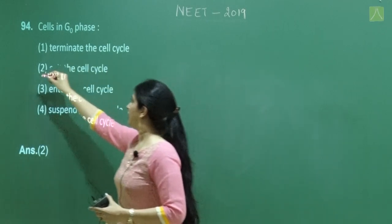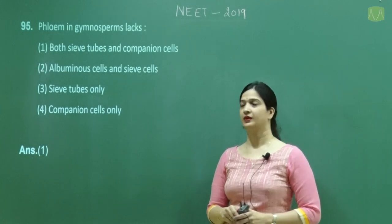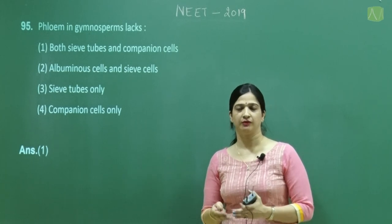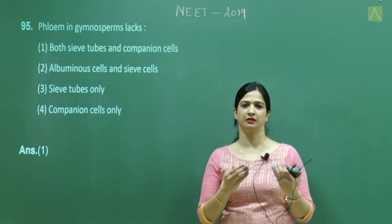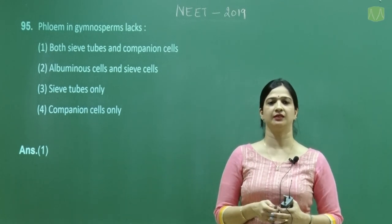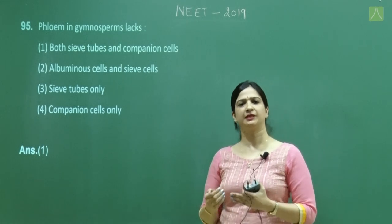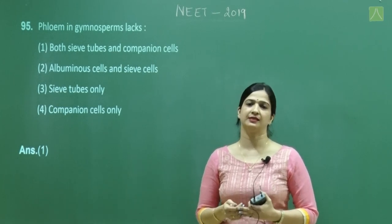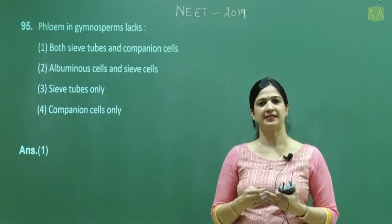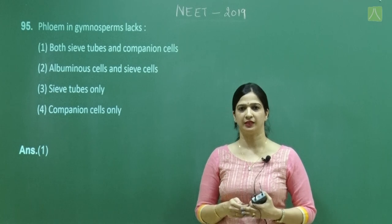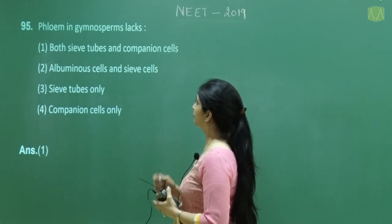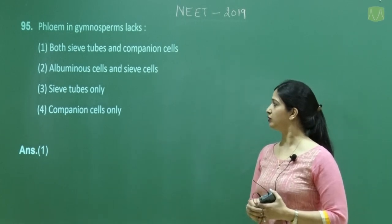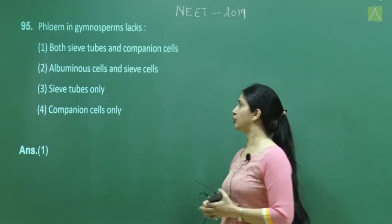Question number 95: Phloem in gymnosperms lacks companion cells as well as sieve tube elements. As we go through evolution from bryophytes to angiosperms, vascular tissue first appeared in pteridophytes. In gymnosperms, the phloem instead has sieve cells and albuminous cells (analogous to companion cells). The correct option is 1: both sieve tubes and companion cells are absent.